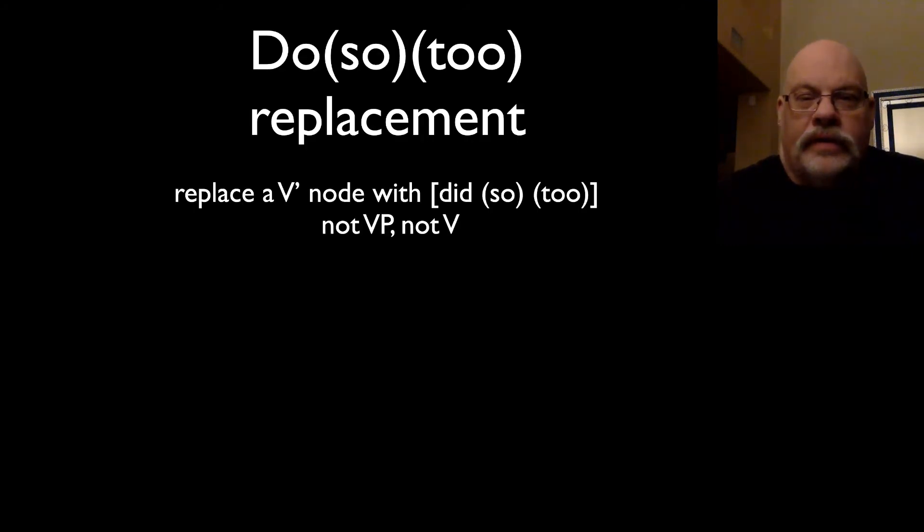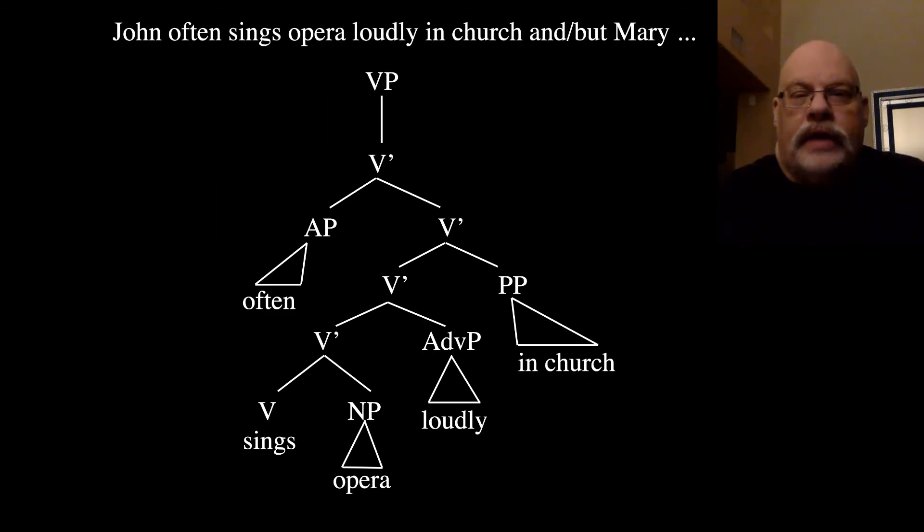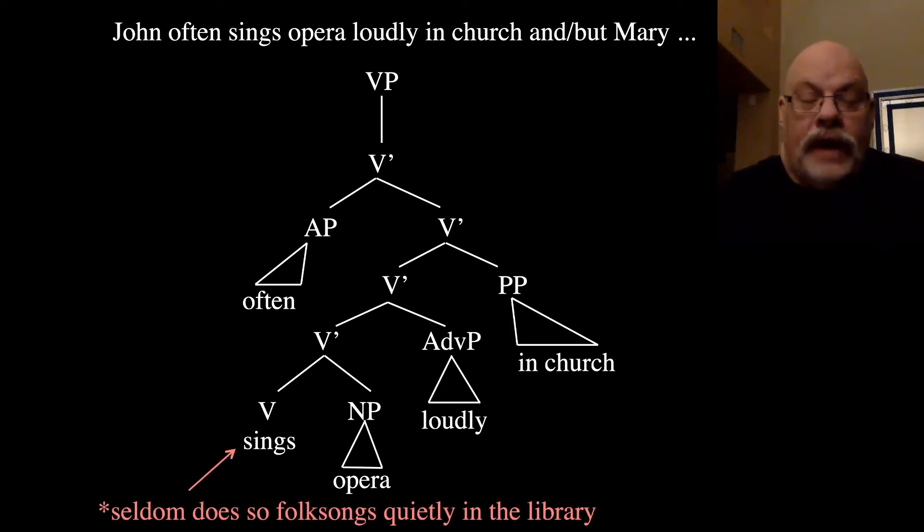So let's talk about what the does-too rule does. It replaces a V bar node, not a VP, not a verb, with does-so-too or does-so or does-too or did, whatever one works best. So let's look at this structure here. Now, remember we said that it replaces V bar, not V. So you can't say: